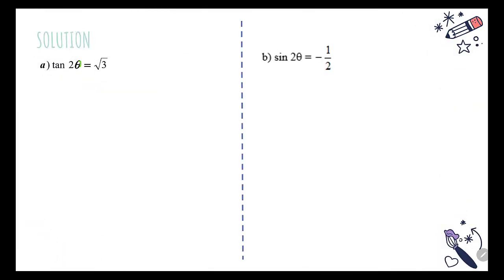For example 17a: tan(2θ) = √3. The main difference is that this is not θ — this is 2θ. We were given the range 0° to 360°, but since the angle is 2θ, we have to change the range to 2θ by multiplying by 2. So the new range will be 0° to 720°.